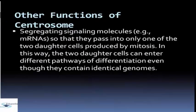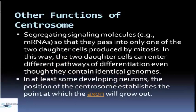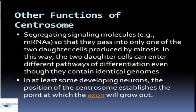Another function of the centrosome is segregating signaling molecules so that they pass into only one of the two daughter cells produced by mitosis. In this way, the two daughter cells can enter different pathways of differentiation even though they contain identical genomes. Also, in at least some developing neurons, the position of the centrosome establishes the point at which the axon will grow out.